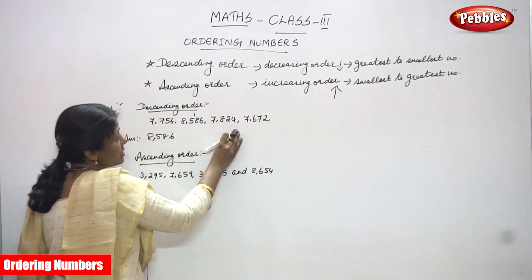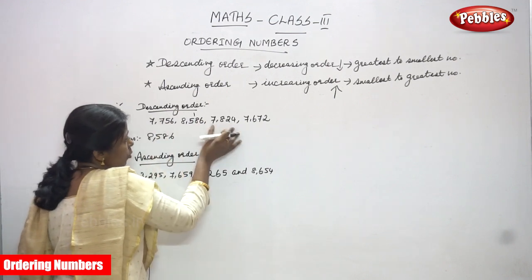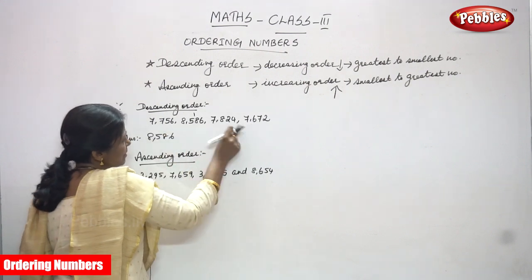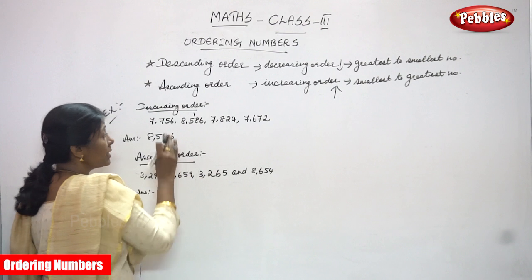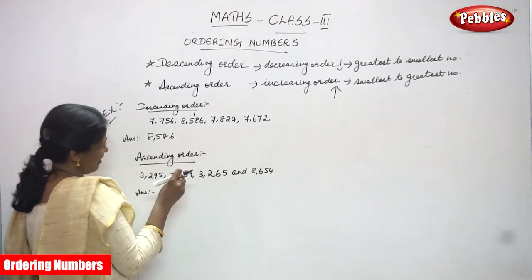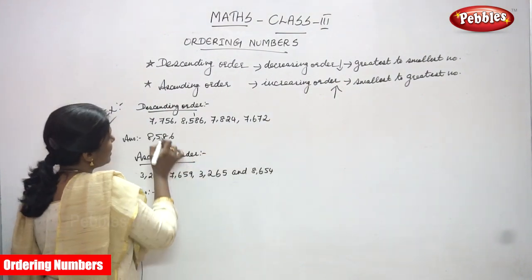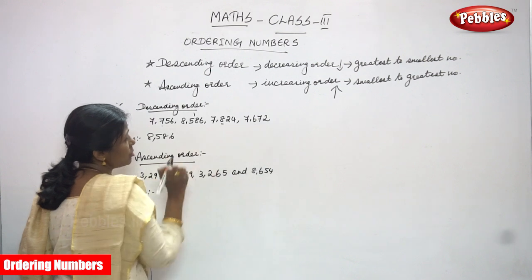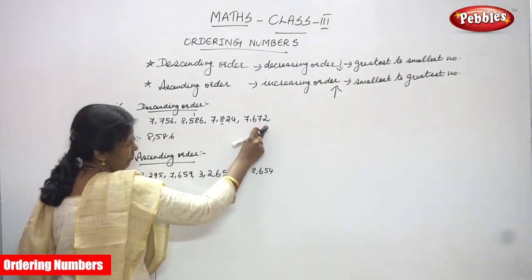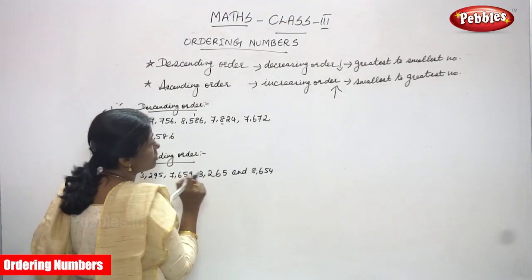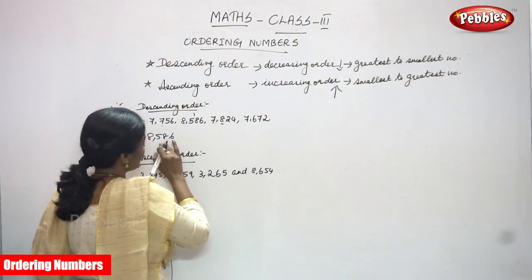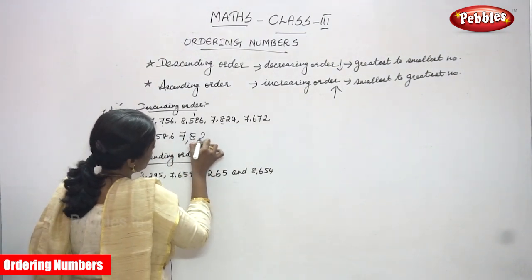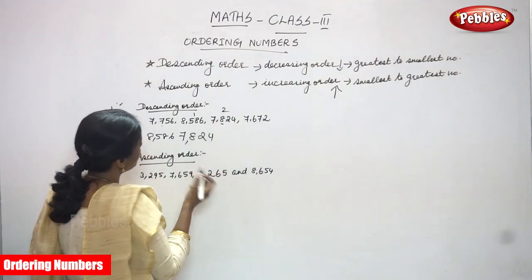All three remaining numbers are the same in the thousands place value, so we concentrate on the hundreds place. The hundreds place values are: 7756 has 700, 7824 has 800, and 7672 has 600. Comparing 700, 800, and 600, the greatest is 800, so 7824 is the next number.